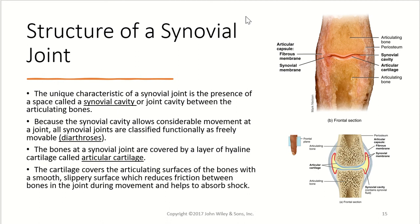Because the synovial cavity allows considerable movement at the joint, all synovial joints are classified functionally as freely movable — diarthroses. The bones at a synovial joint are covered in a thin layer of hyaline cartilage called articular cartilage. This covers the articulating surfaces with a smooth, slippery surface to reduce friction so the bones don't rub together bone-on-bone, and it also helps to absorb shock.